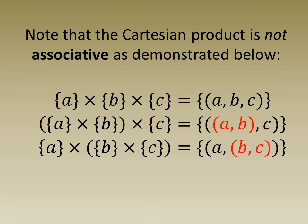Note that the Cartesian product is not associative as well. This is demonstrated below. On the first line, on the right hand side, we have a set containing a 3-tuple. And on the next two lines, we have on the right hand side, sets containing ordered pairs.